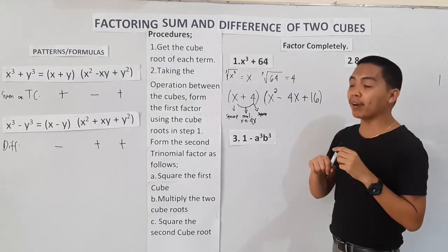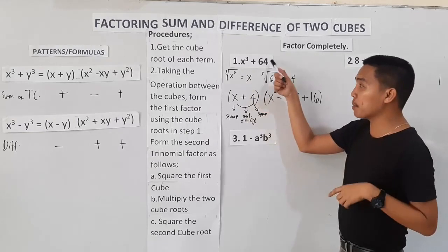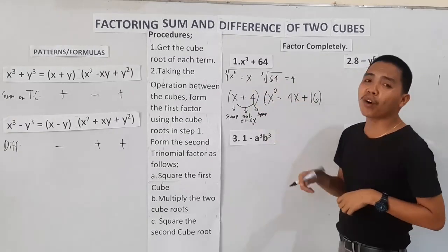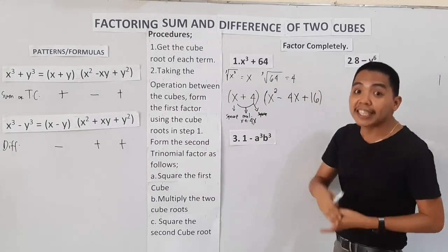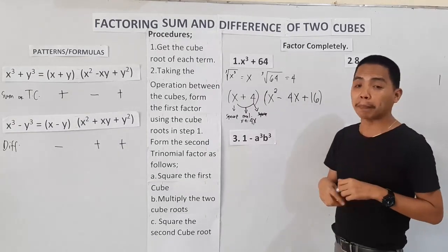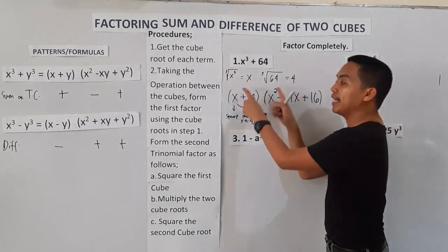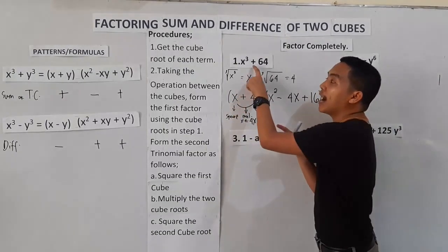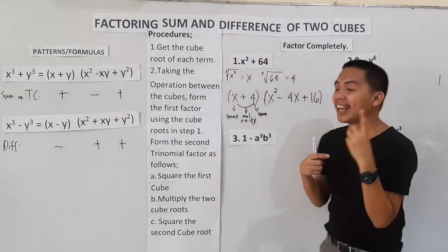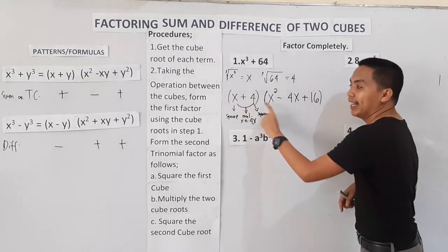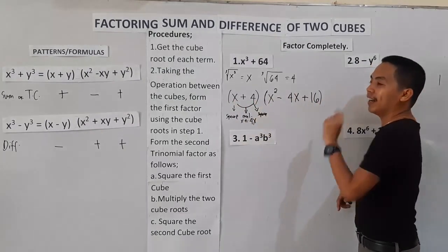To recap: cube root of x³ is x; cube root of 64 is 4, because 4 times 4 times 4 is 64. Copy the two cube roots and the operation to form the first factor (x + 4). Then square, multiply, square to get the trinomial (x² - 4x + 16). That's the complete factored form.